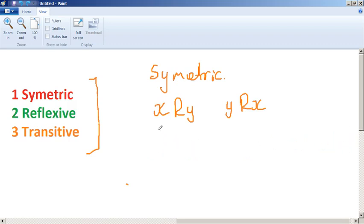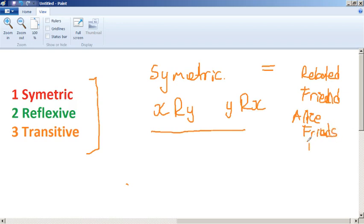And so relations like equals, that's symmetric. Related, probably friends, that should be symmetric. If Alice is friends with Bob, then hopefully it'll be true the other way around as well, and Bob will be friends with Alice.